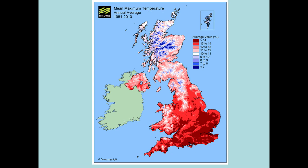Looking at mean maximum annual temperature maps from the Met Office — red is hot, blue is cold. It's generally warmer in the south than the north, which relates to distance from the equator. Also notice the impact of altitude: the high areas of Dartmoor, Exmoor, the Brecon Beacons, Snowdonia, and the Pennines are all picked out in a different colour, because the higher you go in the troposphere, the colder it gets.